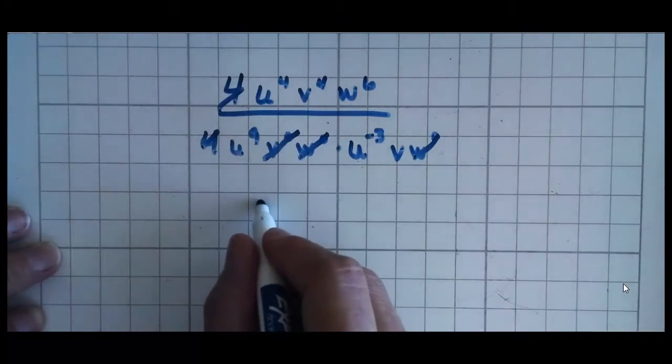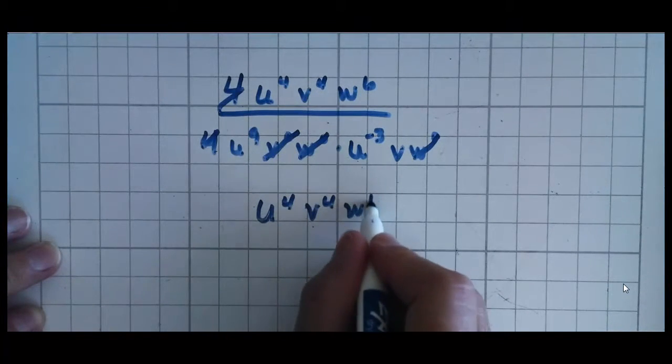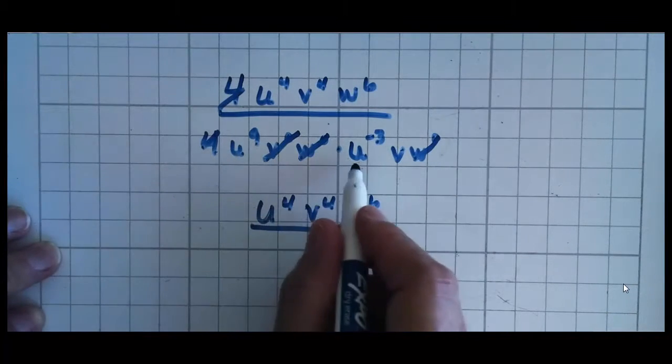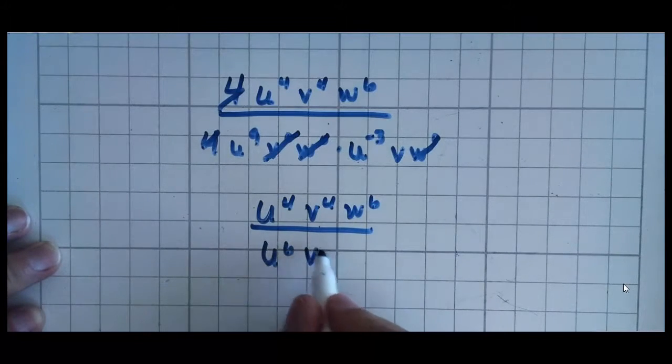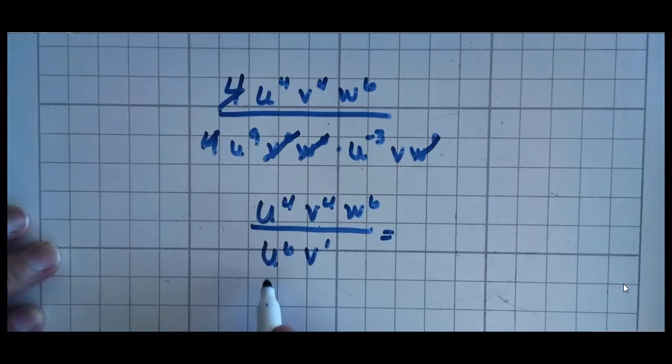So now let's see what we've got. We've got u to the 4th, v to the 4th, w to the 6th, over what? Here I have 9u's minus 3u's is u to the 6th, and v. What exponent is next to that v? It's a 1. So what are we going to do from here? Well, you take top number minus bottom number for each of these individual exponents. 4 minus 6 is u to the negative 2.